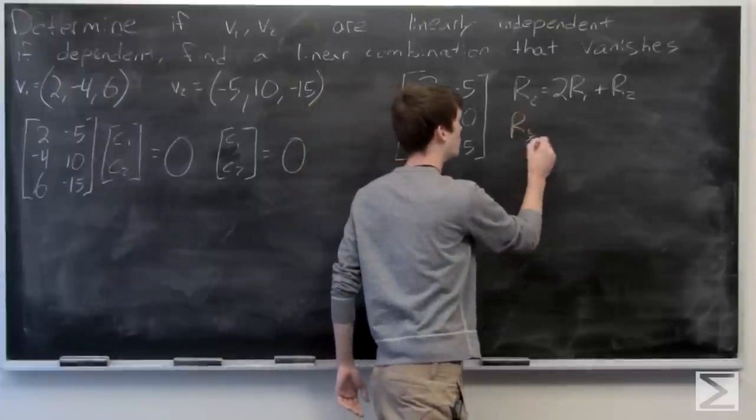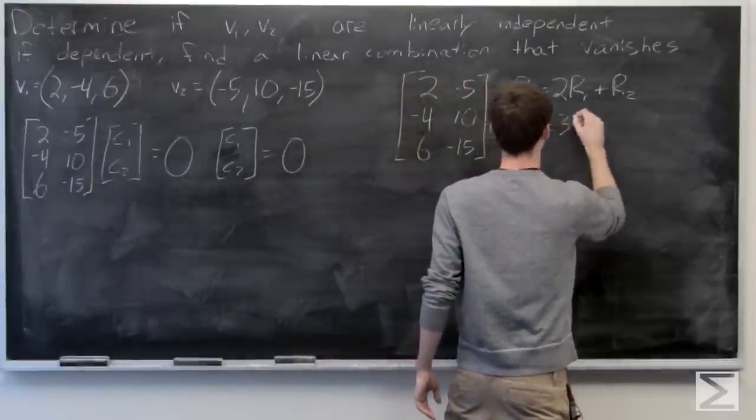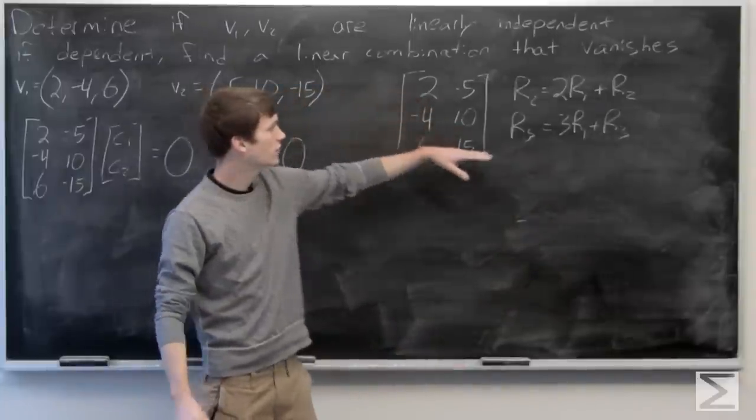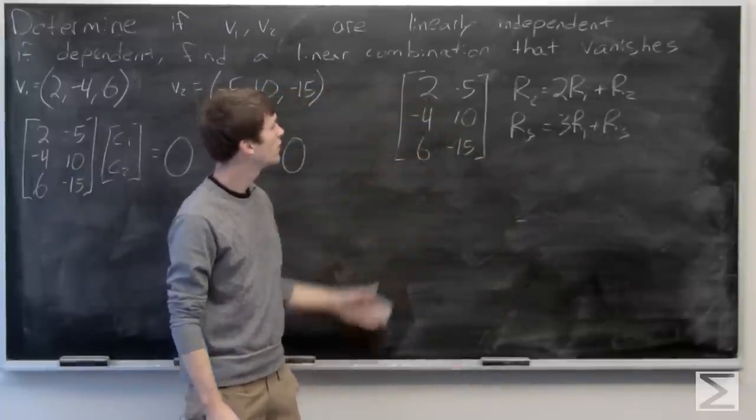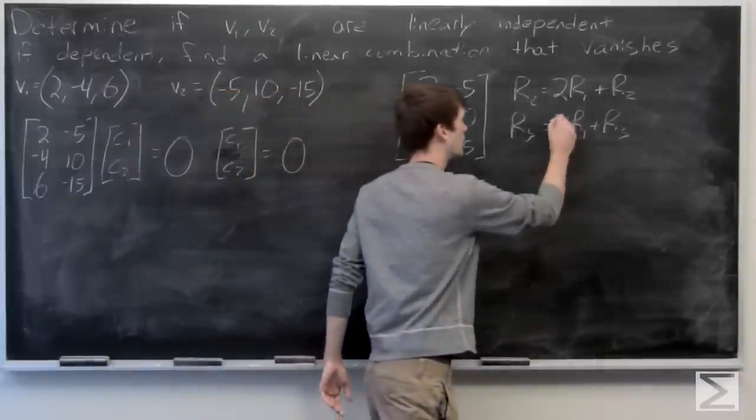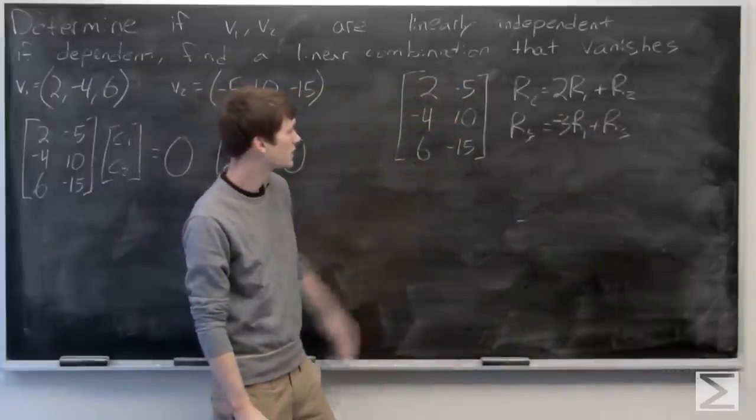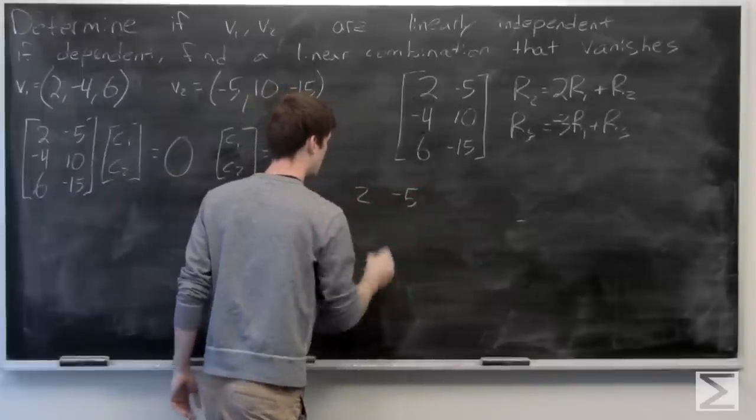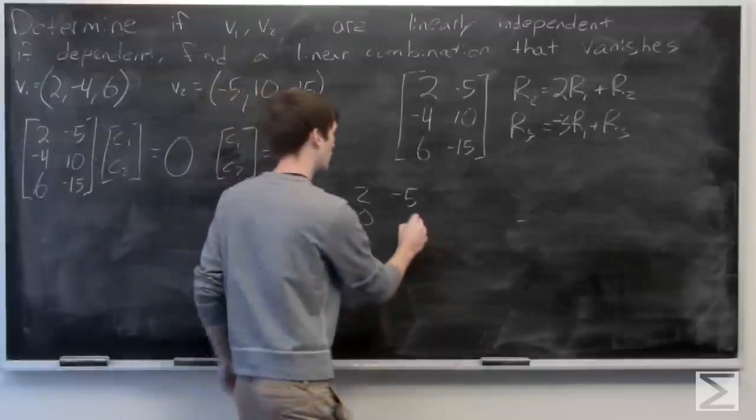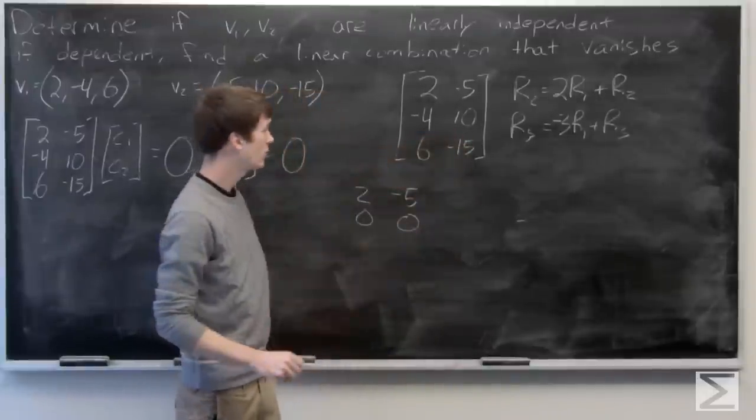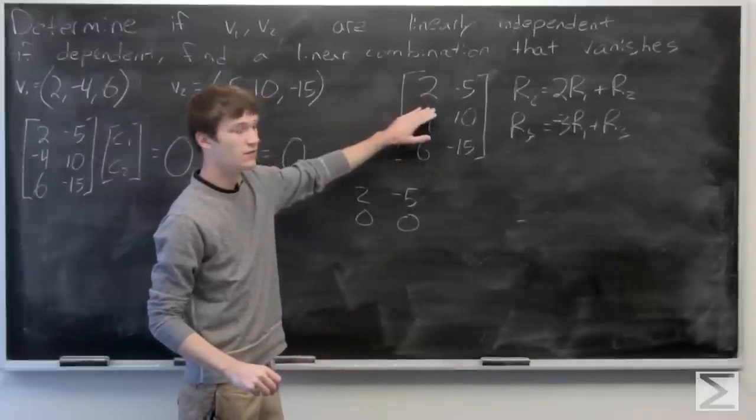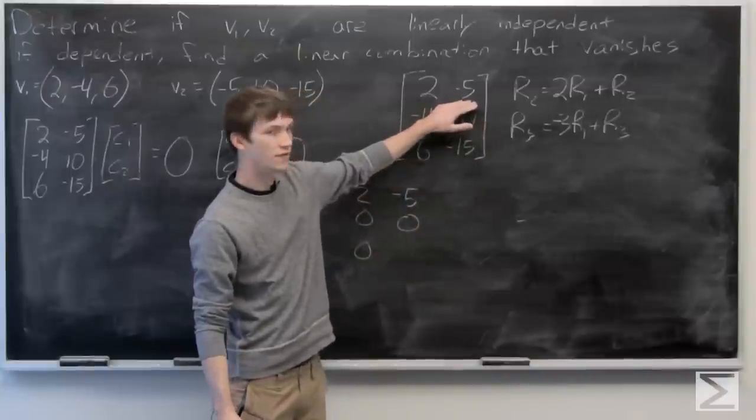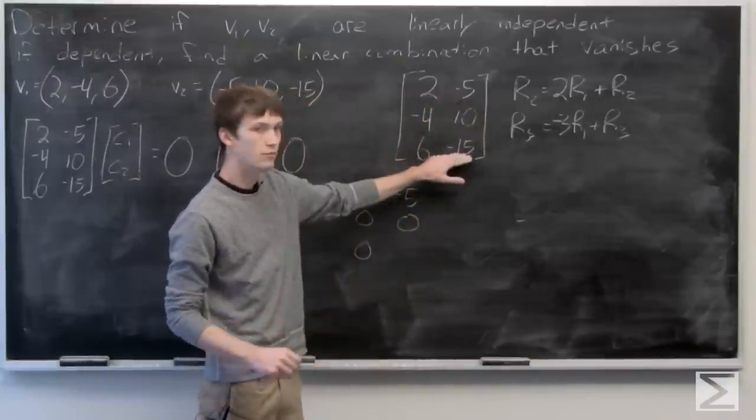Similarly for row 3, we'll set row 3 equal to 3 times row 1 plus row 3. So we have negative 6 plus 6 is 0, negative 10 plus 10 is 0, and for the third position, negative 15 plus 15 is 0.